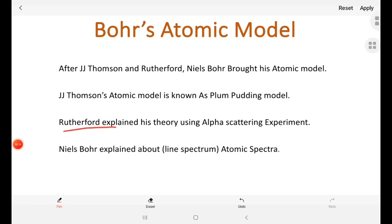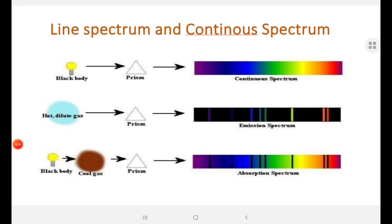Rutherford explained his theory using alpha scattering experiment. Alpha scattering - helium nuclei, not atom, just helium nuclei. Those particles we call them as alpha particles. Niels Bohr explained his atomic theory on the basis of energy levels. In order to discuss Bohr's atomic model, first we should have a brief understanding about what is line spectrum and what is continuous spectrum.